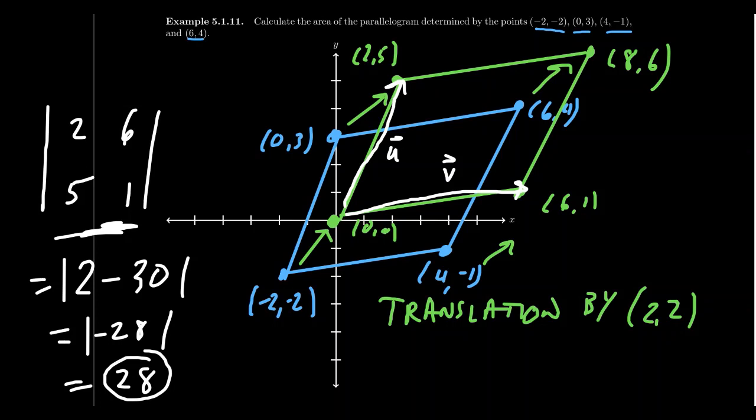And that brings us to the end of our lecture today. That concludes section 5.1 about introduction to determinants. We'll talk some more about determinants, of course, throughout this chapter. We'll talk about these more next time.